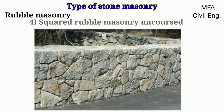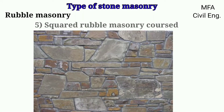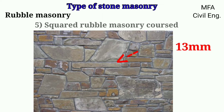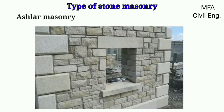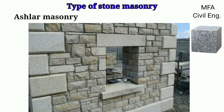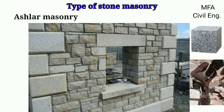In square rubble masonry, coursed, semi-dressed stones are used. These stones are arranged in regular courses. Stones of equal height should be used in a course, or two or more stones are kept above each other to make up the height of the course. The mortar joint should not exceed 13 mm, and the stones used in the masonry should be uniform in color. This type of masonry uses well-dressed stones having sharp, straight edges and smooth faces. It is expensive and requires highly skilled labor. The stones should be uniform in color with a pleasing appearance, dense structure, and no defects.